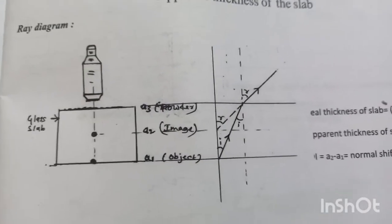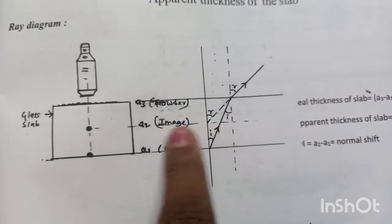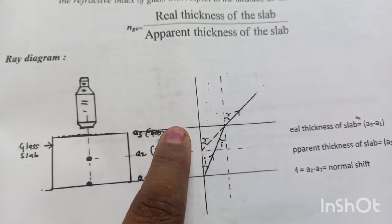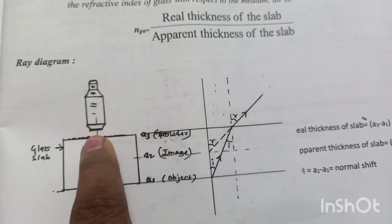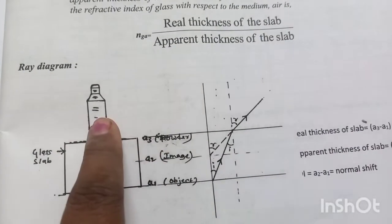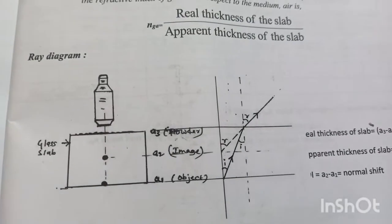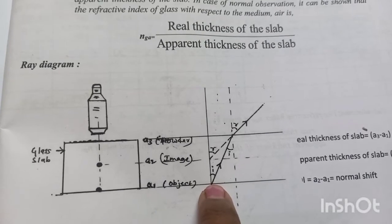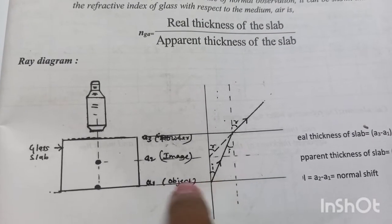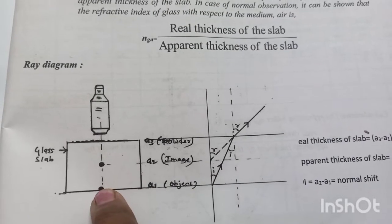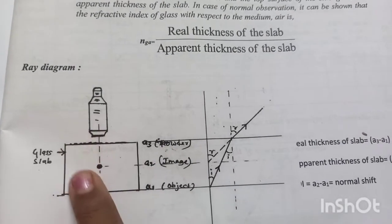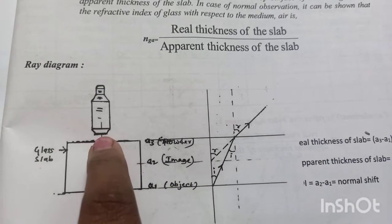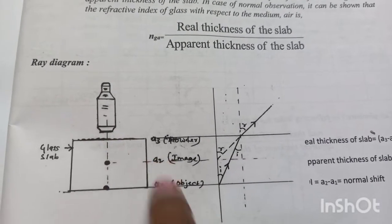This is the ray diagram for the glass slab experiment. A1 is the object, A2 is the image, and the upper surface has chalk dust particles — this is the glass slab viewed through the eyepiece. Without the glass slab, the point appears at its actual depth; with the glass slab placed, it seems to be raised, and we have to determine the thickness of the glass slab.